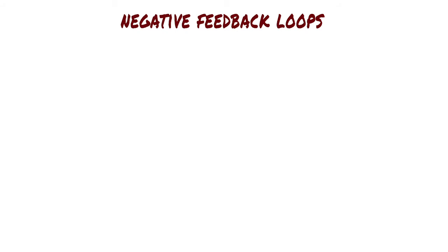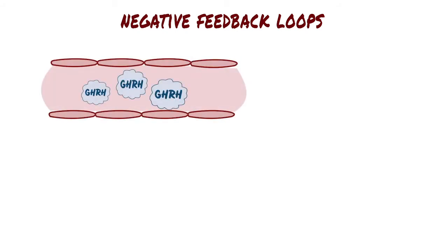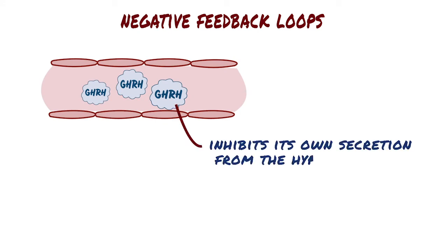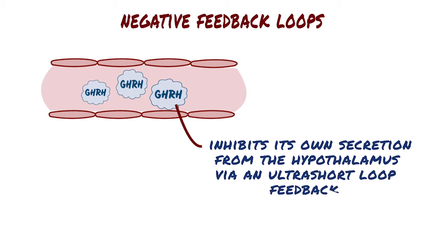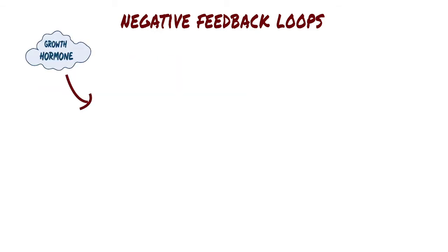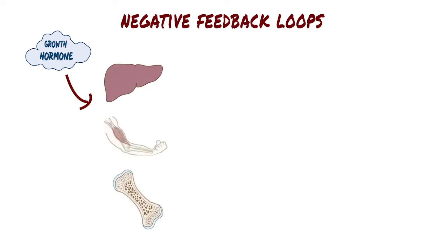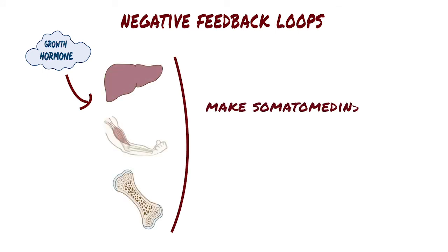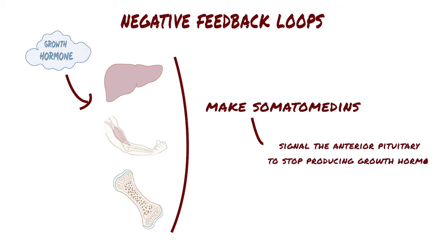There are a few negative feedback loops that generally control the release of growth hormone. First, growth hormone-releasing hormone inhibits its own secretion from the hypothalamus via an ultra-short loop feedback. Second, when growth hormone reaches tissues like the liver, muscles, and bones, they make somatomedins, which are hormones that signal the anterior pituitary to stop producing growth hormone.